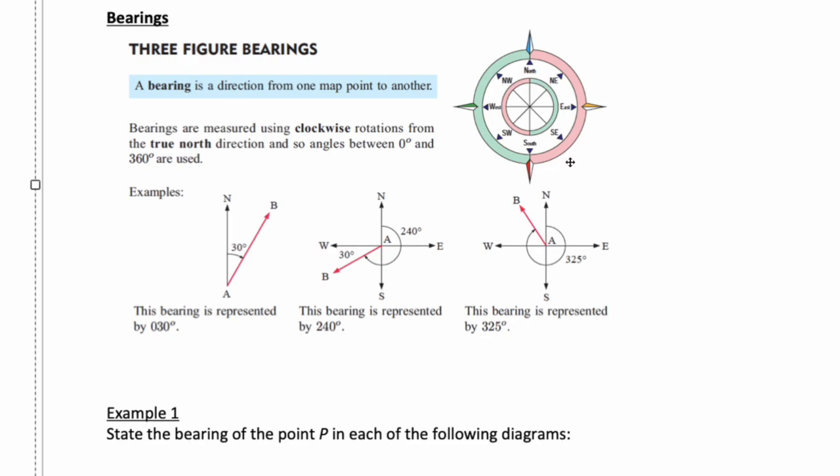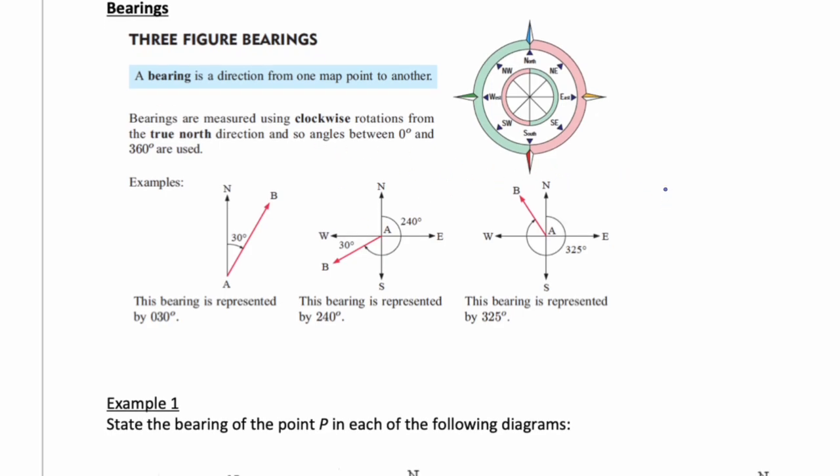Let's take a look at some bearings first of all. We have north, south, east, west - you need to know that for these types of questions. Bearings are always given in relation to north because that's where the compass points.